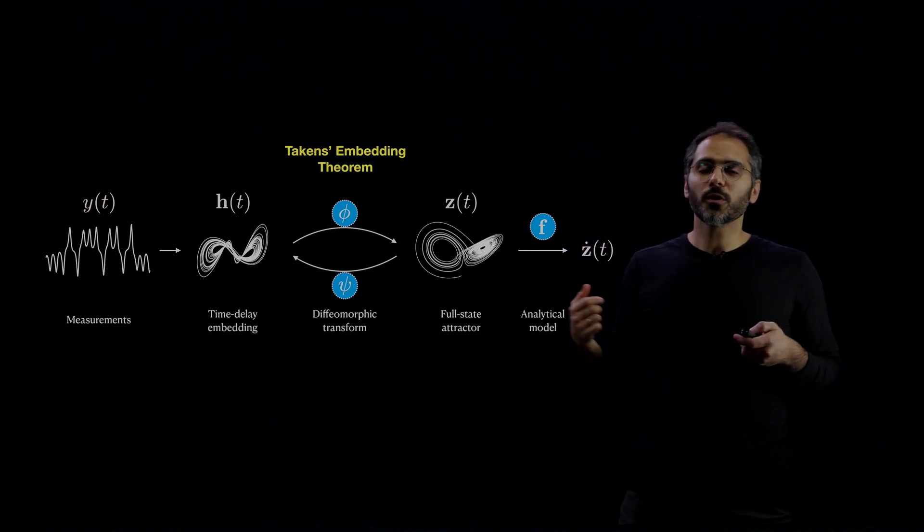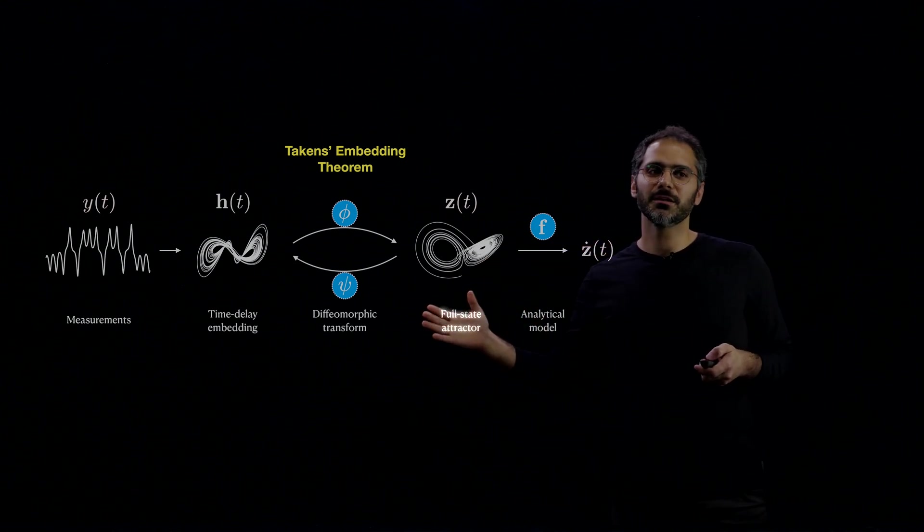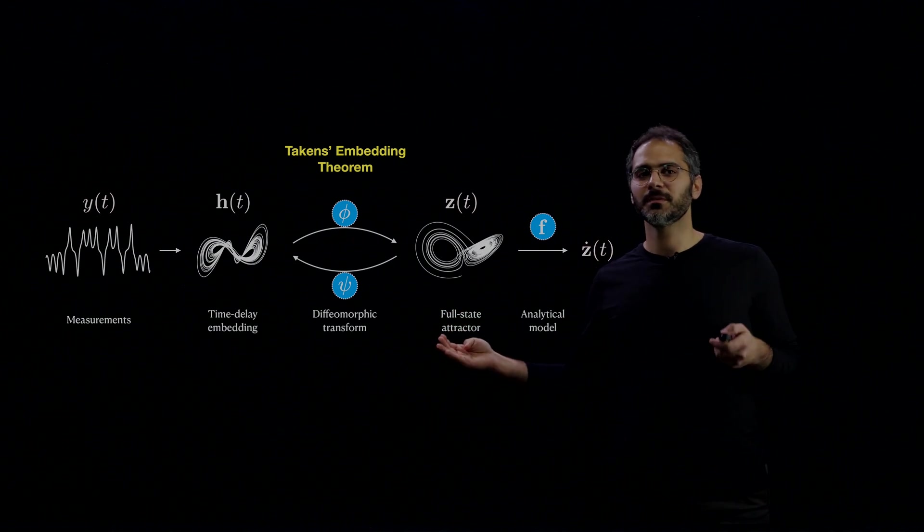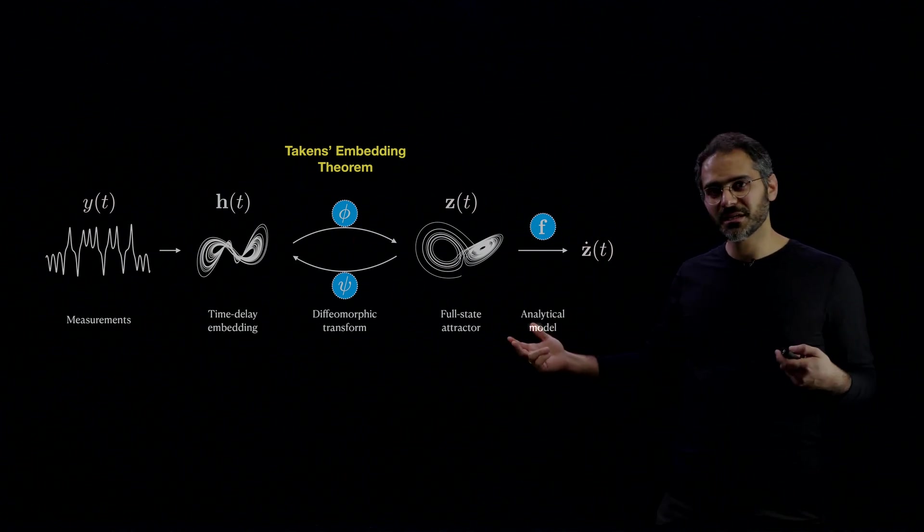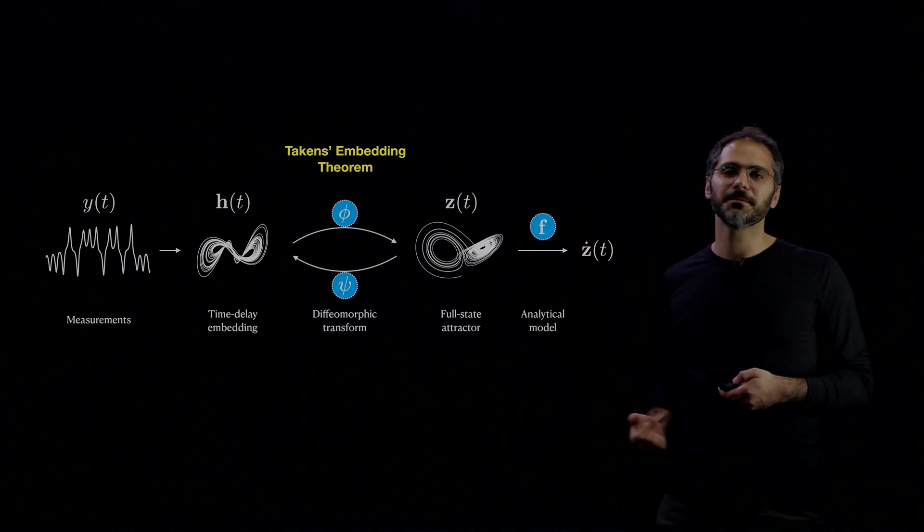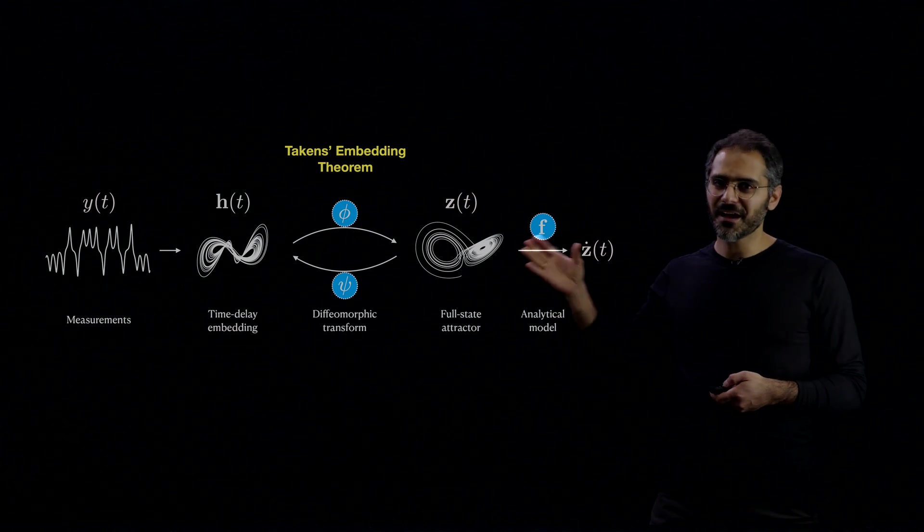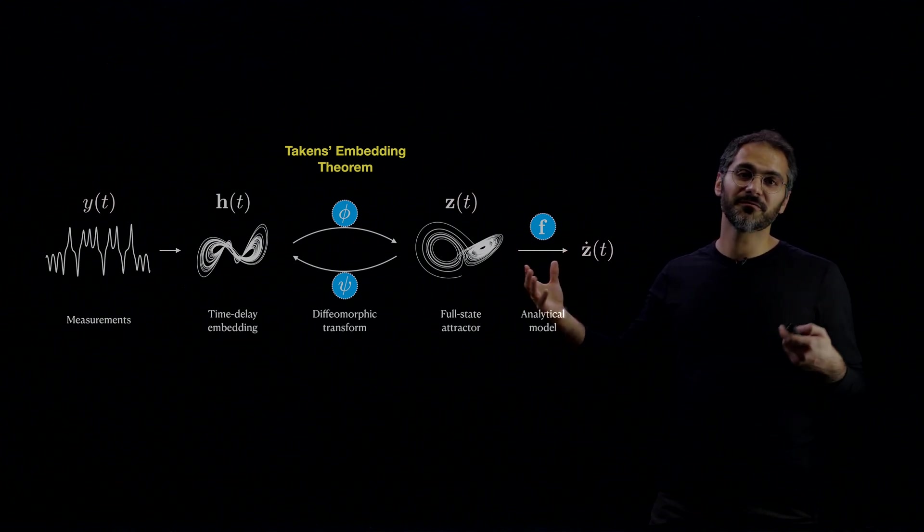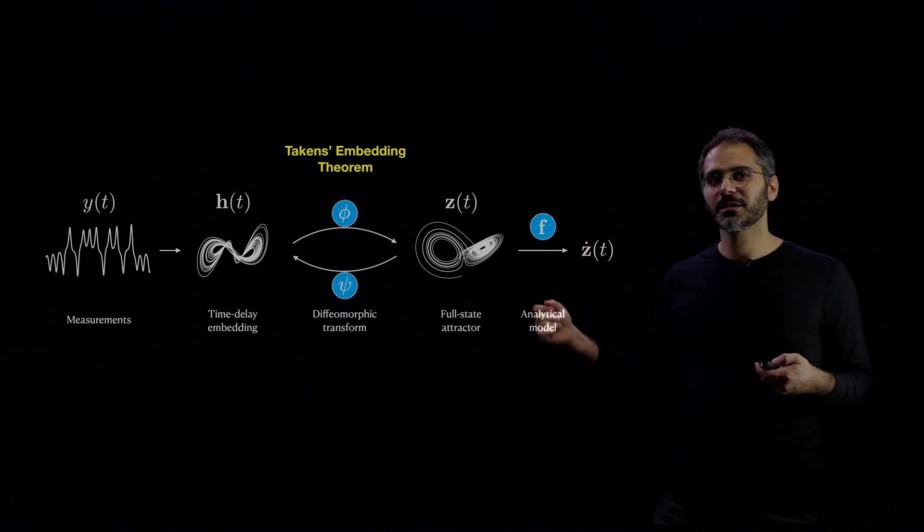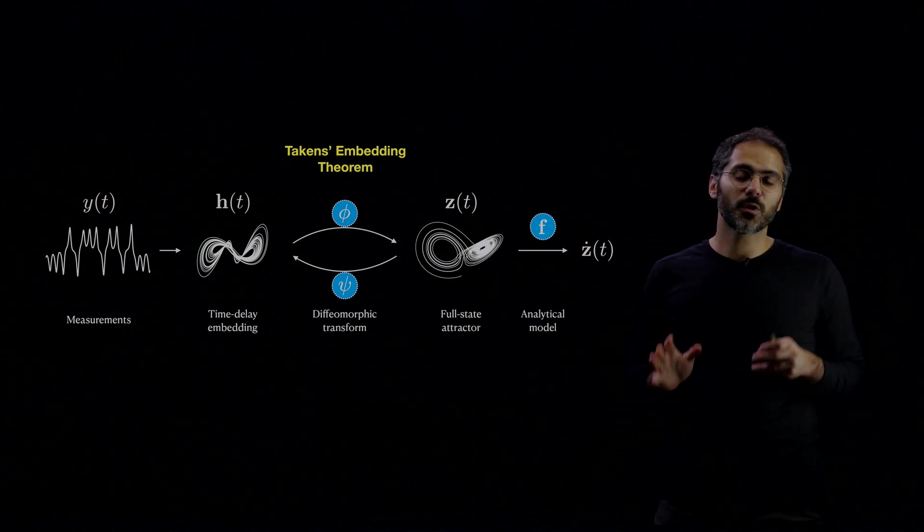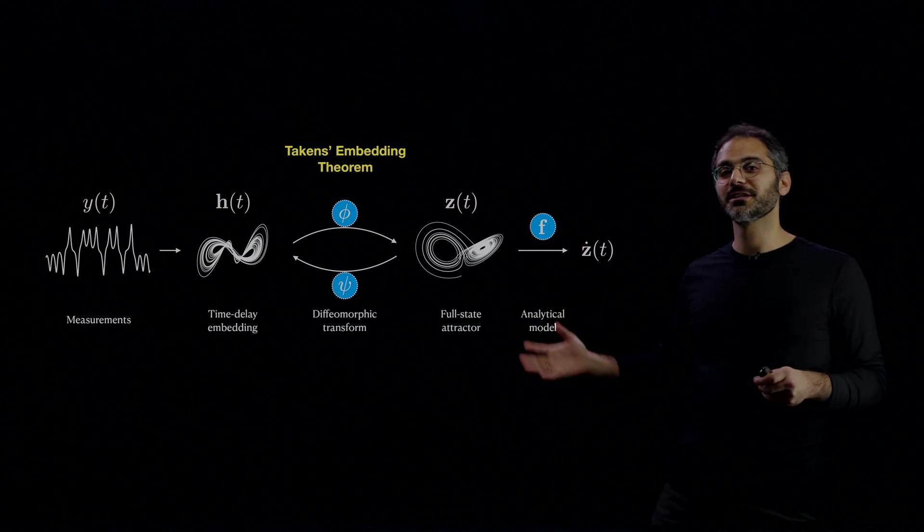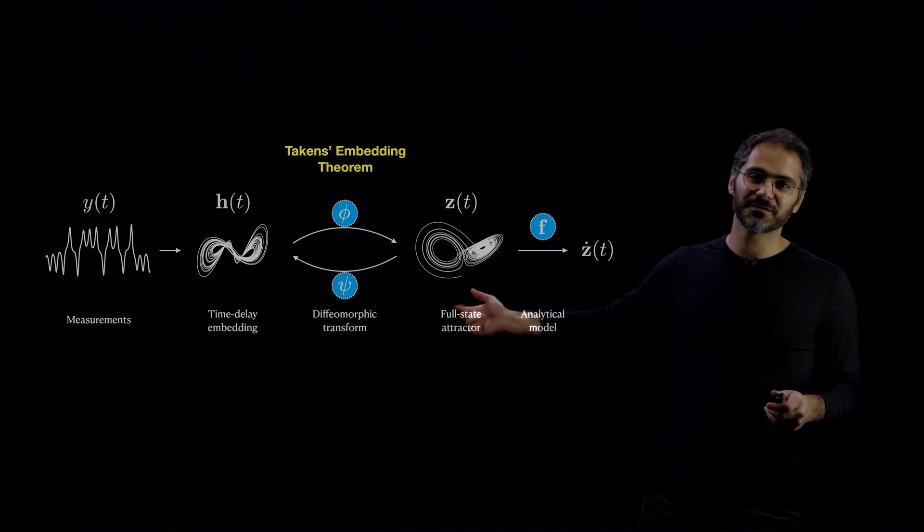Now, we also know that given data in the full-state attractor or coordinates, we can learn the dynamics z dot equals f(z). Now, f is an unknown function, it's an analytical unknown function, phi and psi are also unknown functions. And what we're proposing here is to learn all these functions from data. And the only given data is y(t).